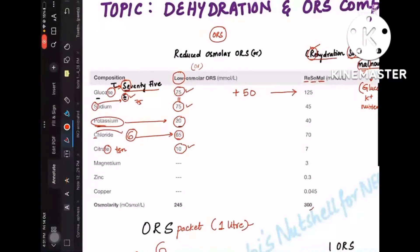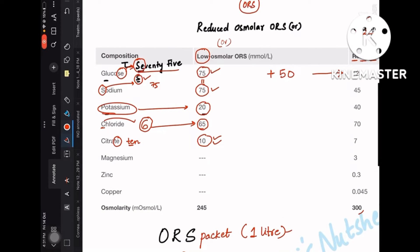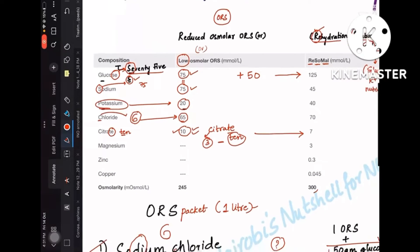Now when you look at this citrate here, it is 10 right. So from this citrate you have to subtract C. In the citrate you have 10 at the end and C at the beginning. C is the third letter and 10 is this, so 10 minus 3, that constitutes 7. So remember, citrate is 10. When you have to remember this ReSoMal values, you have to subtract 3 from 10, that is 7. So these two values are okay.